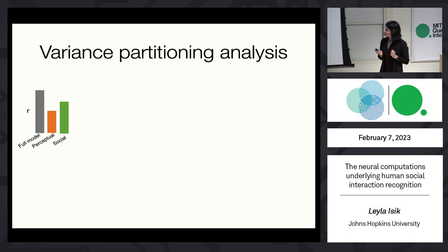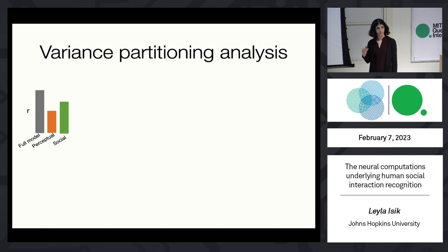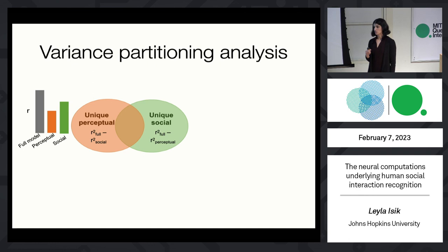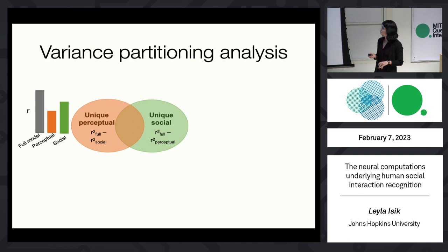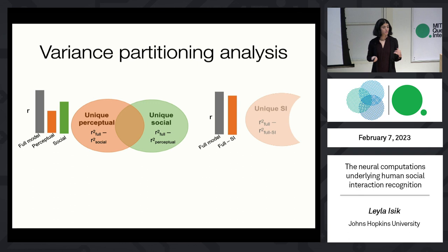To separate contributions of social and perceptual features, we built three encoding models: the full model, a model based on just the perceptual features, and a model based on just the social features. We calculated the unique variance explained in each voxel by the perceptual features by taking the variance explained in the full model and subtracting the social variance explained, and vice versa. We can also look at the unique variance explained by each single feature — for social interactions specifically, we compare the full model to a model trained with every other feature except social interaction, and that difference gives us the unique variance explained by social interaction while accounting for all other features.